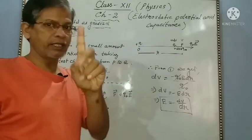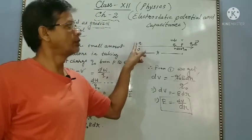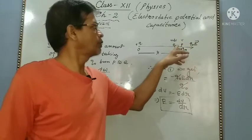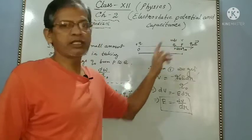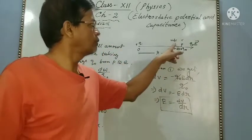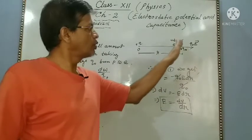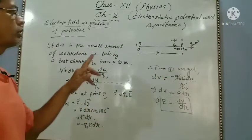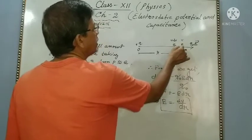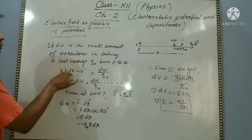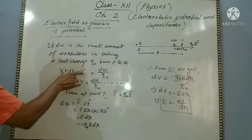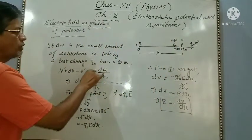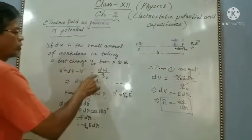To recap: at point P there is a source charge plus Q and a test charge taken from P to Q. At point P the potential is V, at point Q the potential is V plus dV — since Q is closer, the potential is more. The distance PQ is dr. The force on the test charge at P is Q naught times E, and the potential difference equals work done by the charge.